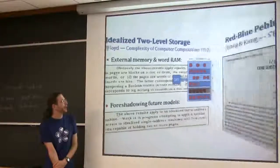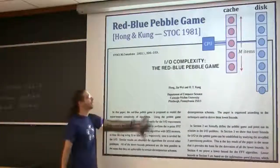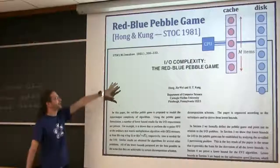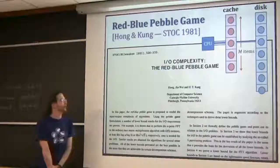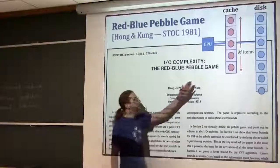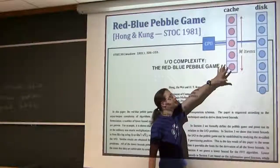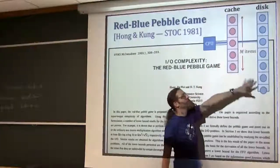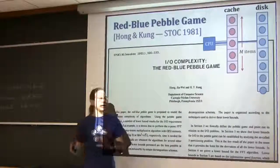The next chapter in this story is 1981 - Hong and Kung's paper, the Red Blue Pebble game. It's also a two-level model, but now there's a cache in the middle. You can remember up to M things before you have to kick them out. The difference here is there are no blocks anymore - it's just items.